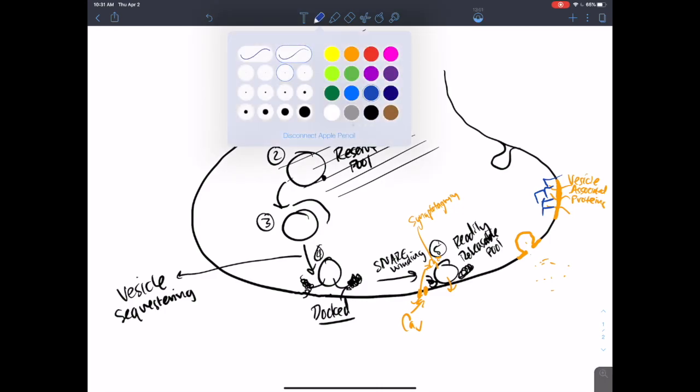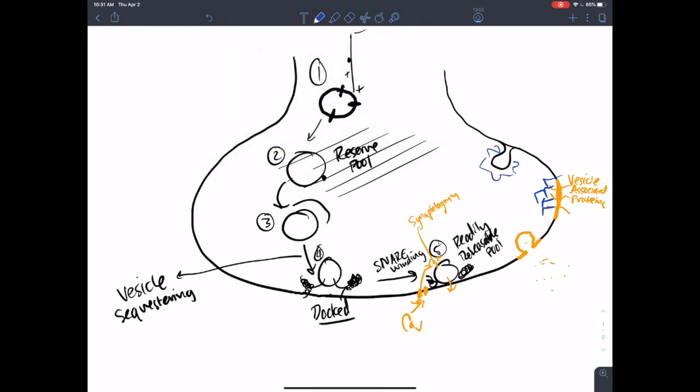Leads to an invagination of this membrane. And then a protein called dynamin is a GTPase, actually pinches off this synaptic vesicle and puts it back in here to where it can be recycled.